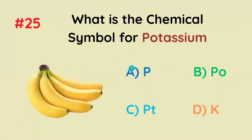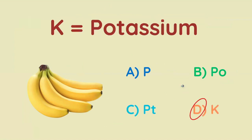What's the chemical symbol for potassium? P, PO, PT, or K? It's actually K, because we use the Latin name.